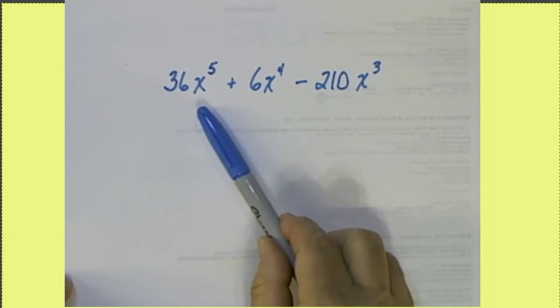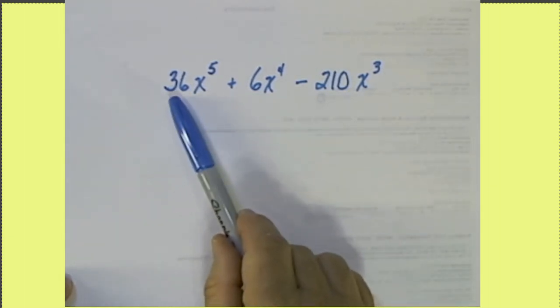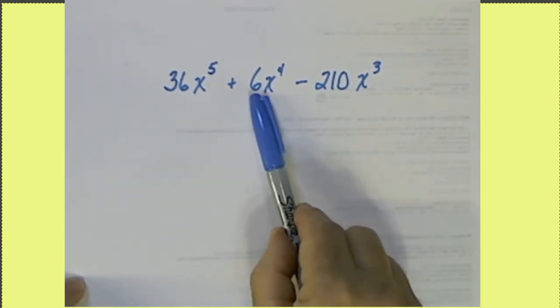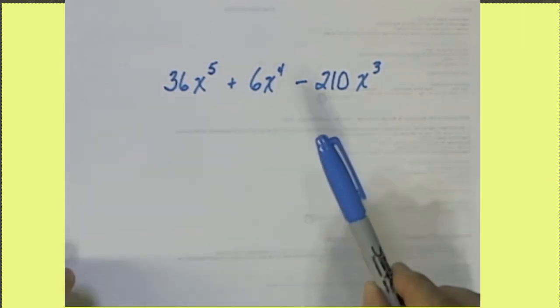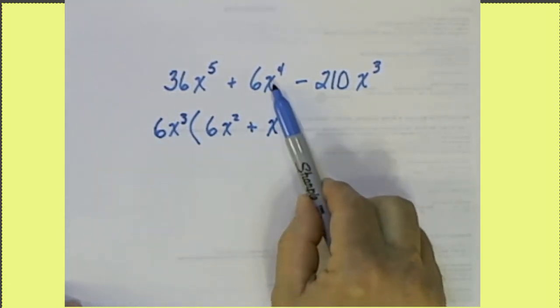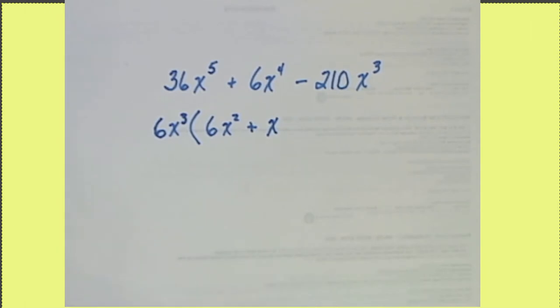You might notice that there's also a 6 in each one of these. 6 will go into 36 six times, 6 will go into 6 one time, 6 will go into 210 35 times. So we'll be able to factor out a 6X cubed and we'll be left with 6X squared plus X because we were able to factor out the 6 and we were able to factor out 3 of these X's. Minus 35.